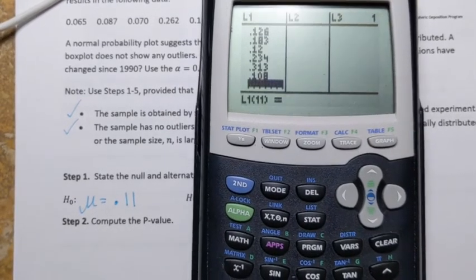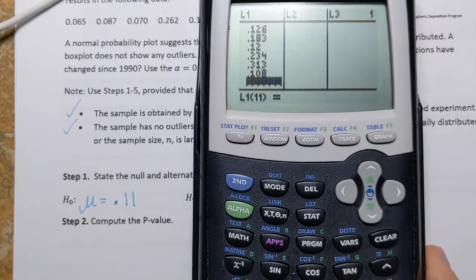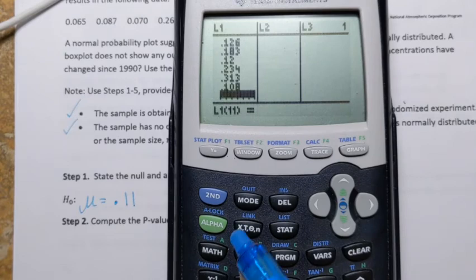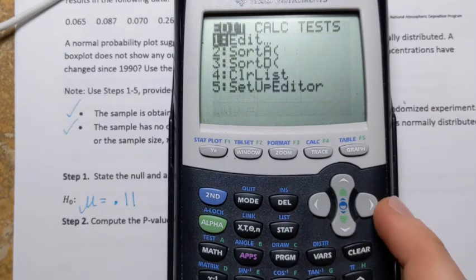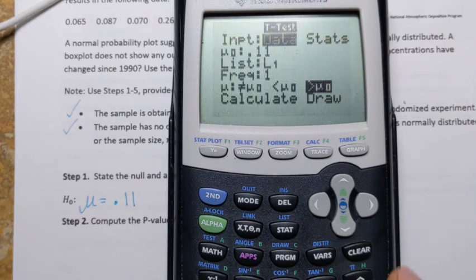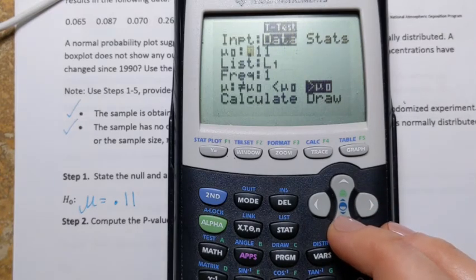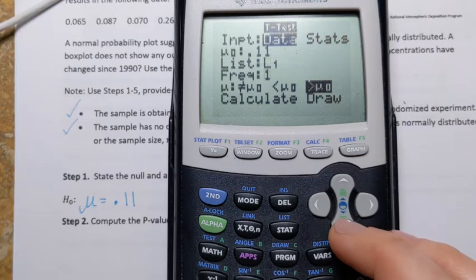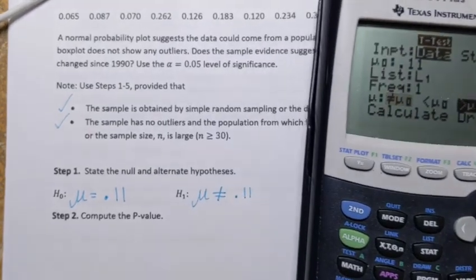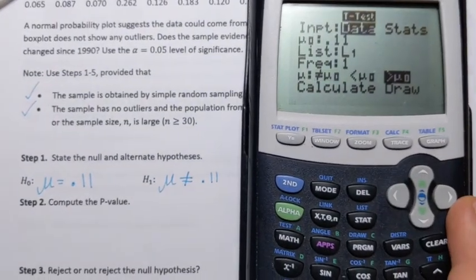Now I'm ready to enter the values from my sample. I enter the data and I'm ready to go back to the test. So STAT, TESTS, number two, T-Test. Okay, yes, now the data is in list one. Skip frequency, we don't have to change anything here.